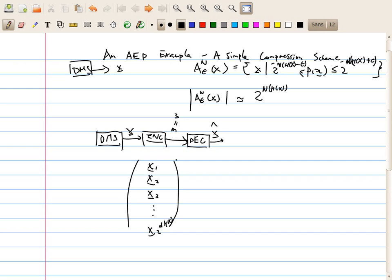and then send to the decoder. This will work as long as we have n is sufficiently large, and then we can ensure that all sequence drawing from this source will be typical,